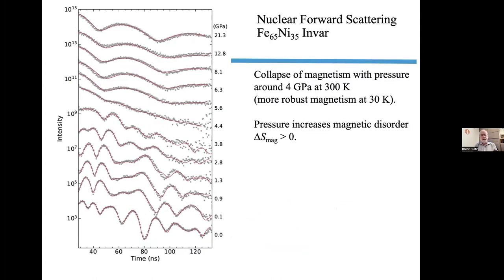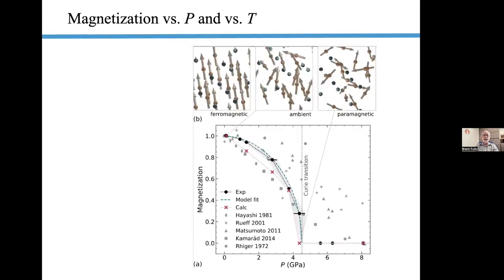The nuclear forward scattering results show many quantum beats from the magnetic hyperfine interference effects at low pressures at ambient temperature, and these beats go away at about four gigapascals. Above that pressure, we get a thickness beat and a zero hyperfine magnetic field — the nuclear magnetic field, which is proportional to the local magnetization, has disappeared around four gigapascals. So we are going through the Curie transition as a function of pressure.